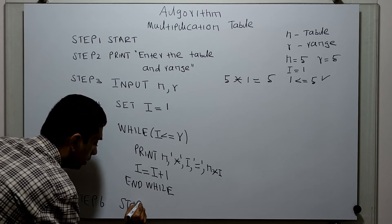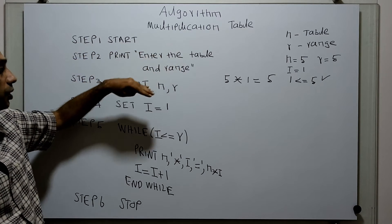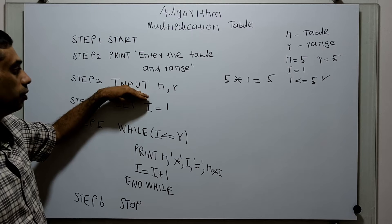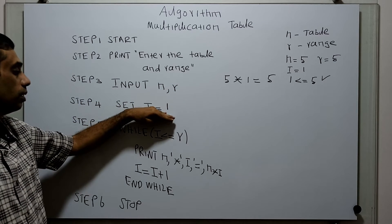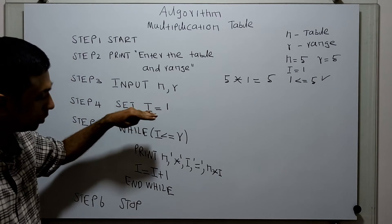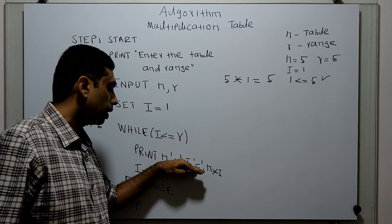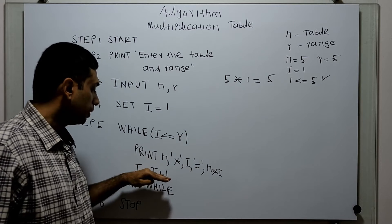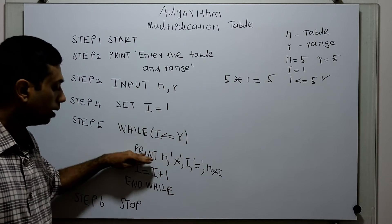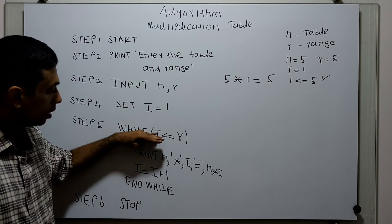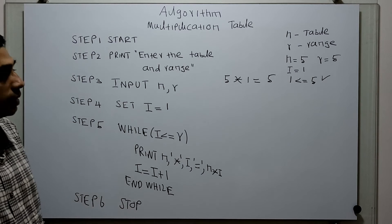So this is the full algorithm. Step 1: start. Step 2: ask the user to enter the table and range. Step 3: input n comma r — n stores the table value, r stores the range. Step 4: initialize i equal to 1. Step 5: while i less than or equal to r, print n star i equals n into i, then increment i by 1. Once i less than or equal to r is false, the control comes out of the loop and the algorithm ends.